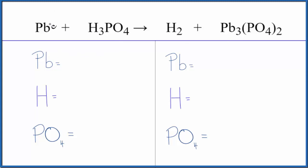One lead atom, three hydrogen atoms, and then this PO4, it's called the phosphate ion. It's a polyatomic ion, I have it here, stays together in the reaction, I have it here as well. I'm just going to count that as one thing, so I have one phosphate ion.